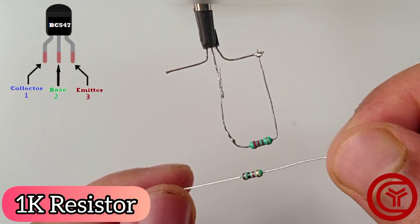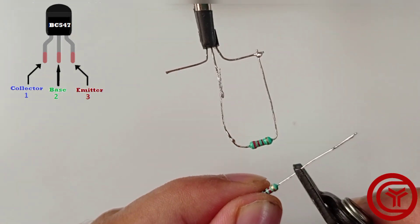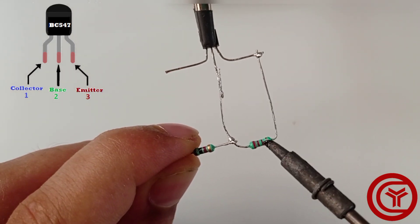Now we take a 1kΩ resistor and cut excess lead. And solder resistor on base of transistor.